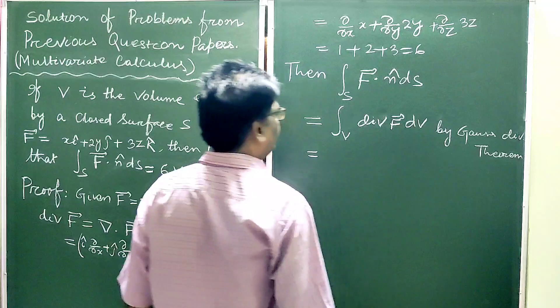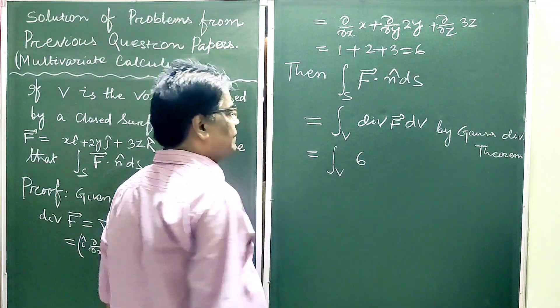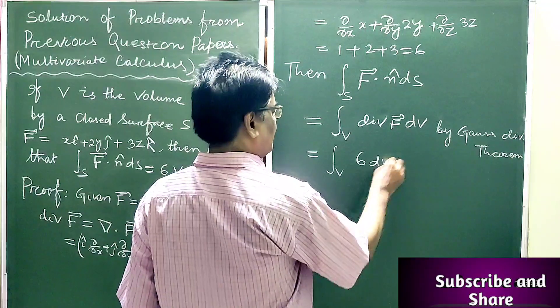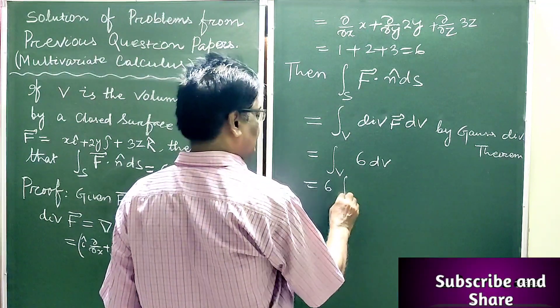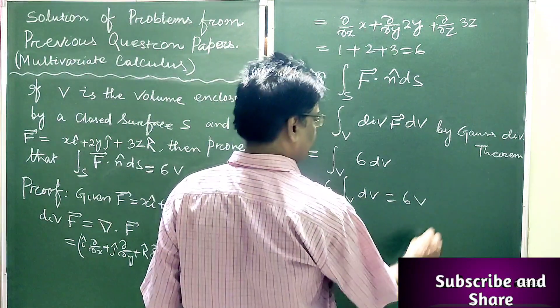So this is equal to integration over V, the value of the divergence of F is 6 dV. So 6 times integration over V dV is equal to 6V.